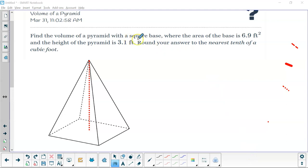Okay, for our next problem, we have a pyramid with a square base where the area of the base is 6.9 feet squared, and the height of the pyramid is 3.1 feet. So, this is our height right here. This red dotted line would be 3.1, and that equals height. And then, the area, it already gives us the area of the base. That's our big B. That's 6.9 feet squared.